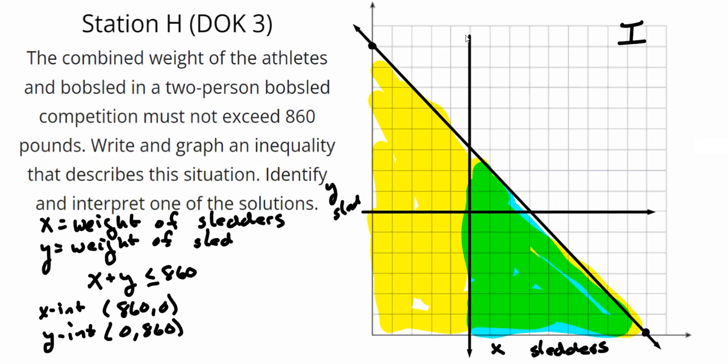So we know that all of our solutions are going to be below this diagonal line. They're going to be to the right of this vertical line, and they're going to be above this horizontal line. So really, our region is this smaller, much smaller triangle here, right?